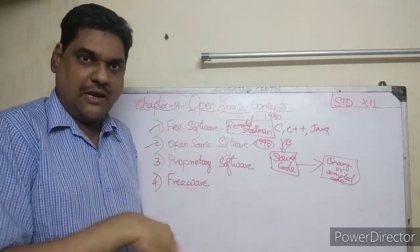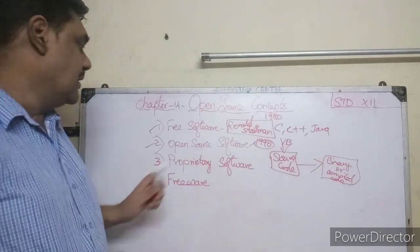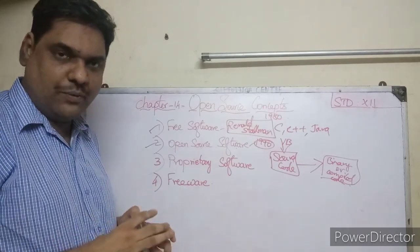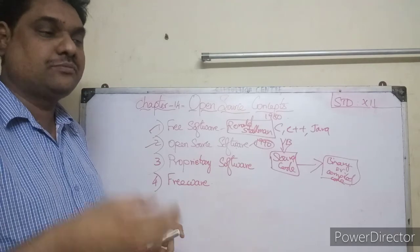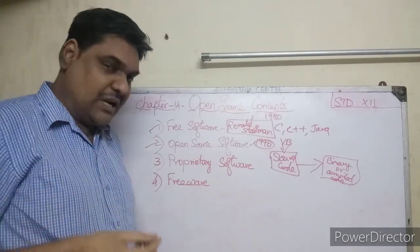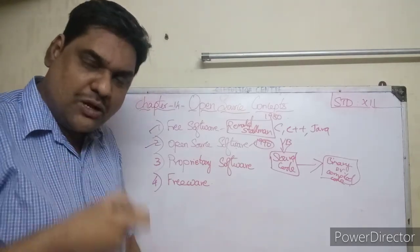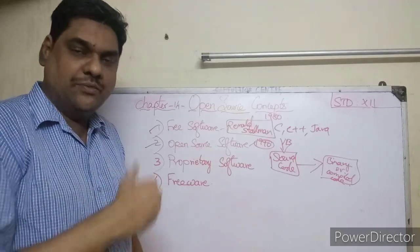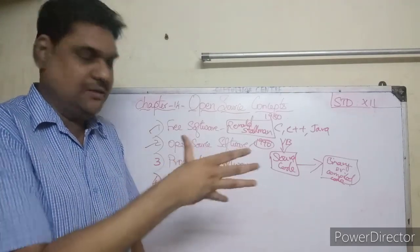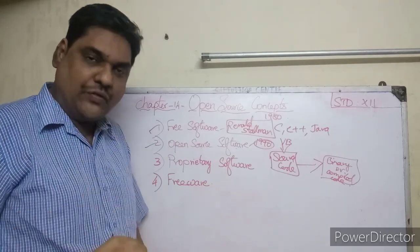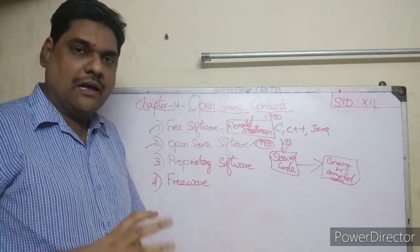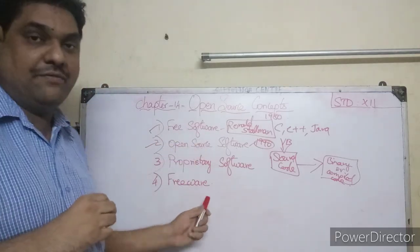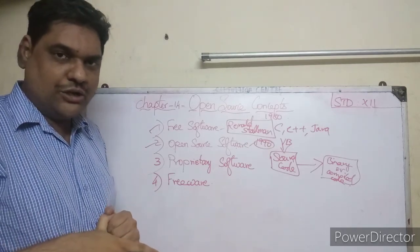So children, to recap: free software, open source software, and proprietary software are the key concepts in this chapter. Free software, freeware, and open source software each have their own definitions and differences.